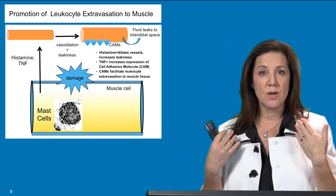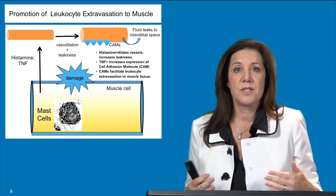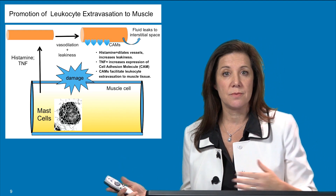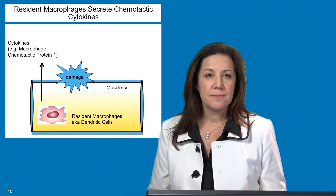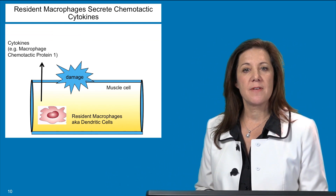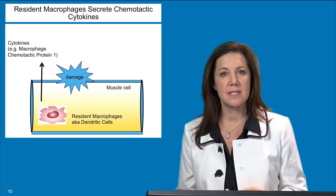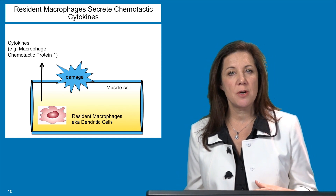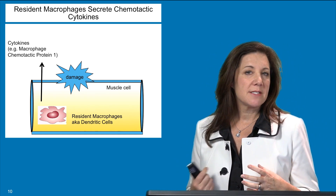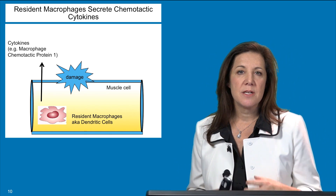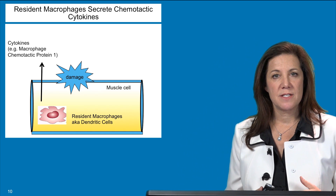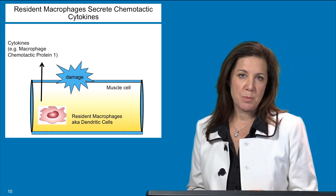All of these early stages are designed to signal to the immune system and facilitate entry into the tissue. A final early stage is the release of cytokines from resident macrophages already sitting in the tissue. These mature macrophages serve a surveillance function and act as an early warning system to recruit other cells. One cytokine they secrete is macrophage chemotactic protein-1 (MCP-1).